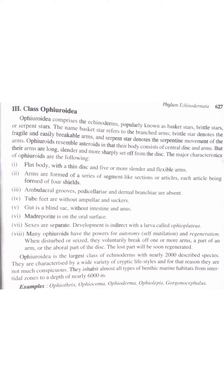Salient features of Ophiuroidea: They have a flat body with a thin disc and five or more slender and flexible arms. Arms are formed of a series of segment-like sections or ossicles, each ossicle being formed of four shields. Ambulacral grooves, pedicellariae and dermal branchiae are absent. Tube feet are without ampullae and suckers.